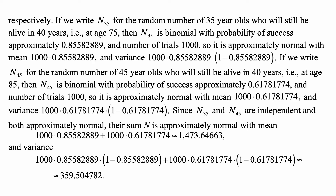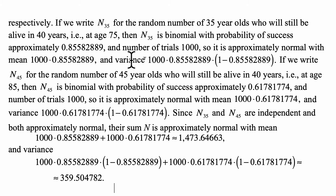If we write N35 for the random number of 35-year-olds who will still be alive in 40 years — that is, at age 75 — then N35 is binomial with probability of success approximately 0.8558289 and number of trials 1,000. So it is approximately normal with mean 1,000 times 0.8558289 and variance 1,000 times that number times 1 minus that number.